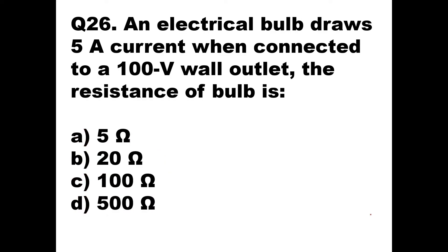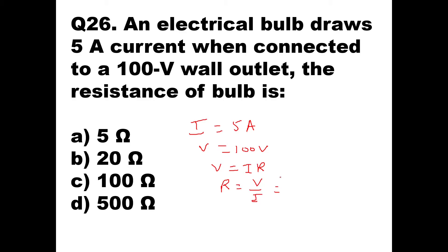Question number 26: an electrical bulb draws a 5 ampere current when connected to a 100 volt wall outlet. The resistance of the bulb is how much? Here I = 5 ampere and V = 100 volts. Using V = IR, R = V/I = 100/5 = 20 ohms. So answer B, 20 ohms, is the right answer.